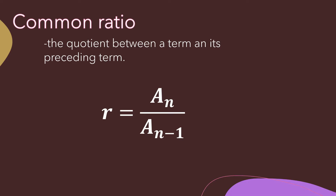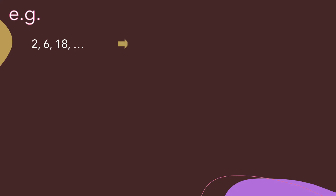How does this formula work in finding the common ratio? For example, given the sequence 2, 6, 18, we find the quotient between the second term and the first term: 6 divided by 2. Therefore, the common ratio of this geometric sequence is 3.